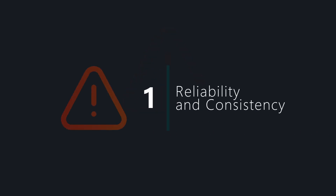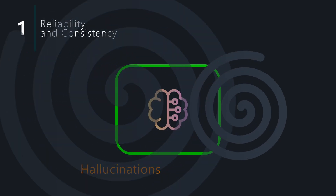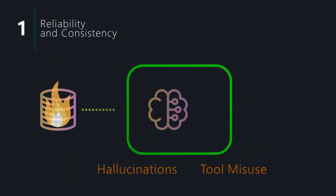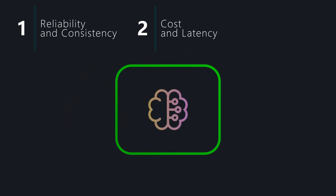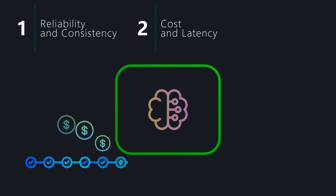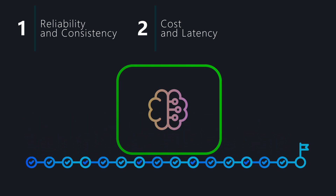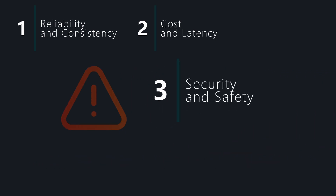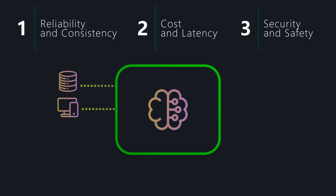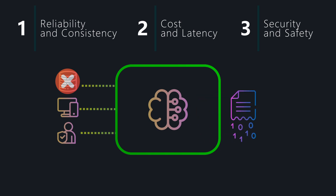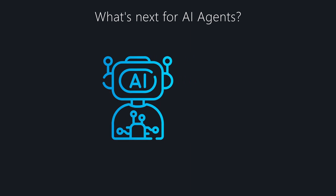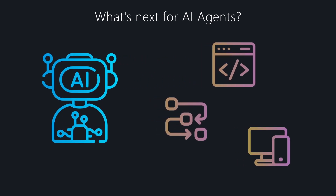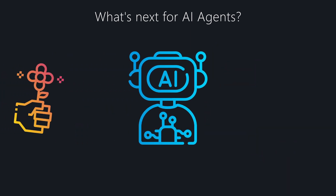LLMs are powerful but unpredictable — they can hallucinate facts or misuse tools in ways that cause system failures. LLMs are computationally expensive, and multi-step planning increases both runtime and cost. If an agent takes 20 steps to solve a problem, that cost adds up very quickly. Giving agents access to real systems, databases, devices, and user accounts introduces serious risks. What if an agent deletes critical data or leaks private information? Ultimately, agents will become seamless assistants embedded in apps, workflows, and physical devices — we just need to make sure they don't cause harm along the way.